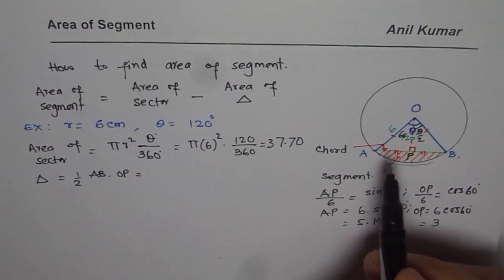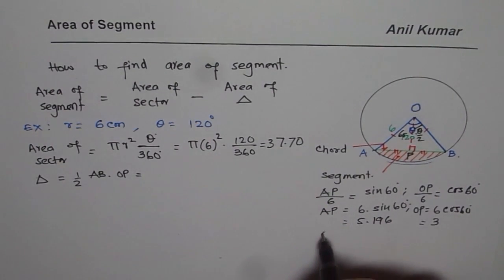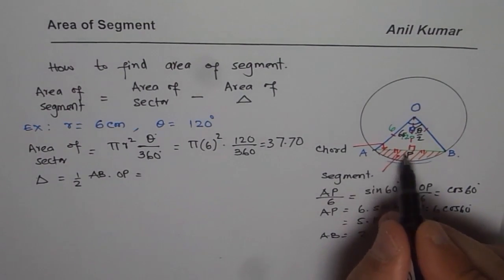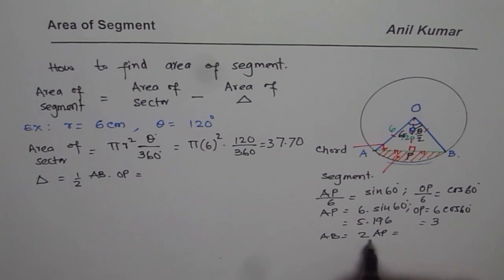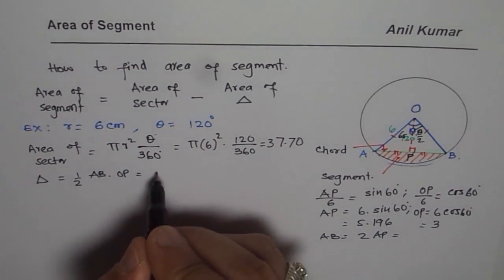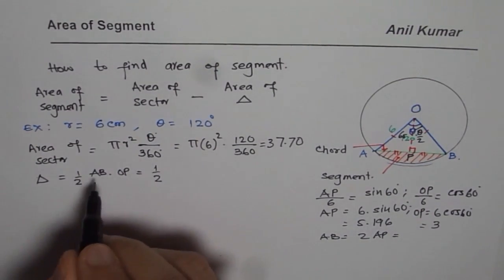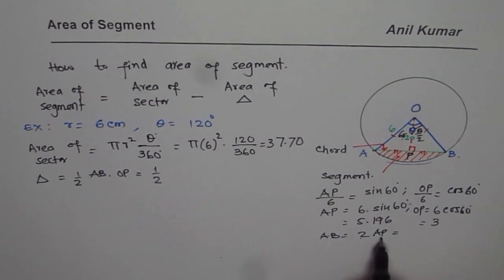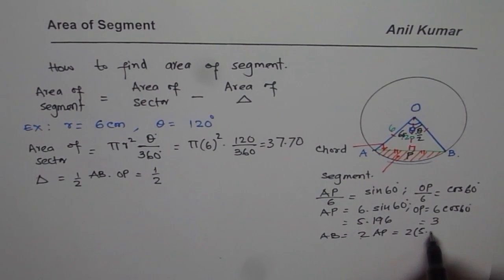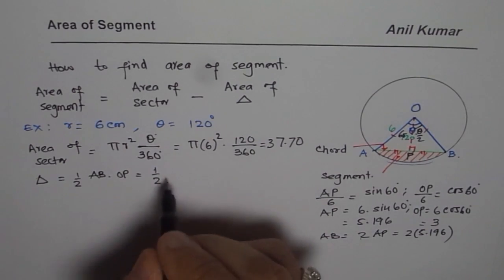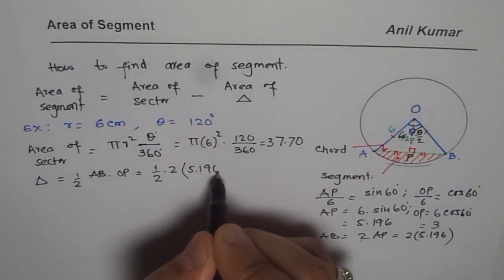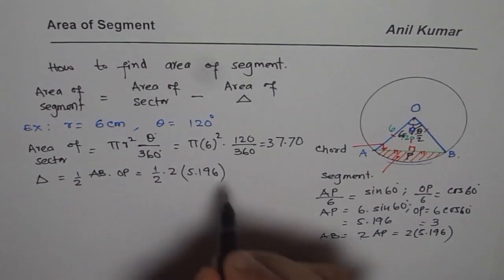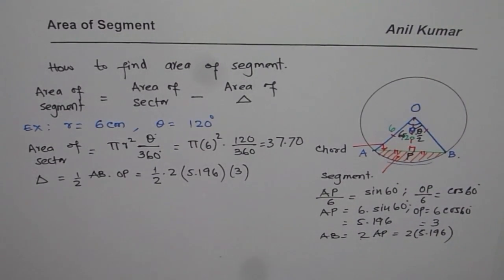And we also know that AB is equals to 2 times AP, since P is the midpoint, 2 times AP. So it is 2 times 5.196. So now we can write this formula here. As area of the triangle is half AB, I am writing 2 times AP, which is 2 times 5.196, times OP which is 3 for us. So we substitute all these values here.